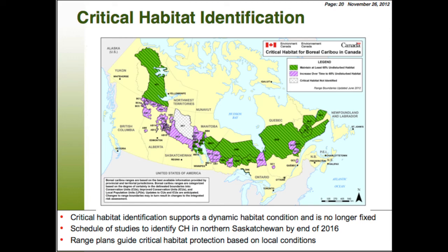This leads into the idea of range plans, which are supposed to guide critical habitat protection based on local conditions. Implementation of range-level actions is going to be key for the recovery of boreal caribou. Range plans outline how a given range will be managed to maintain or attain a minimum of 65% undisturbed habitat over time. Once range plans are in place, they could be adopted by the Minister of Environment as an action plan under SARA, or several could be put together as one action plan. Until a range plan is produced — with a timeline of three to five years — the initial definition of critical habitat will be applied to the entire range.